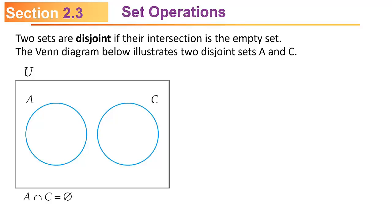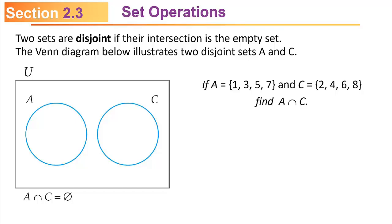Two sets are disjoint if their intersection is the empty set — if there is no overlap, nothing is in common, so the intersection is empty. Looking at the Venn diagram, there is no overlap. Symbolically, A intersect C equals the empty set if the sets are disjoint. For example, if A = {1, 3, 5, 7} and C = {2, 4, 6, 8}, there are no elements in common, so those two sets are disjoint and the intersection is the empty set.